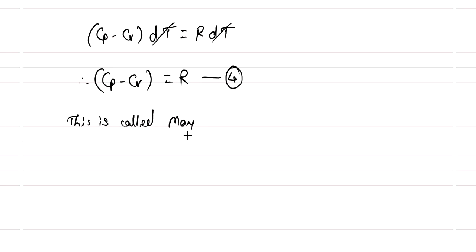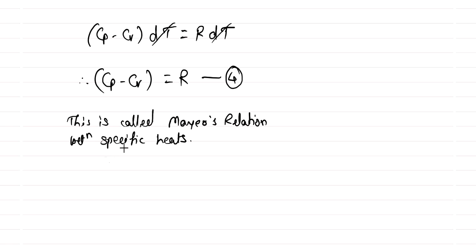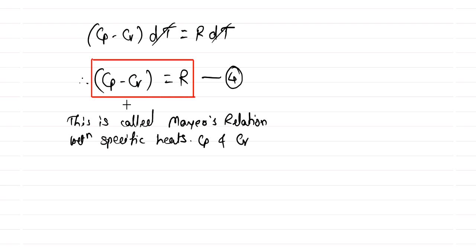This equation, Cp minus Cv equals R, is called Mayer's relation between the specific heats Cp and Cv. This is the Mayer's relation between specific heats Cp and Cv.